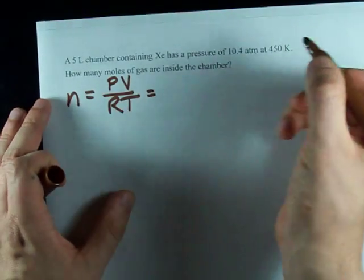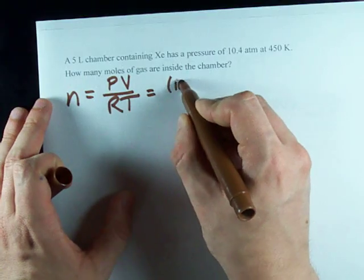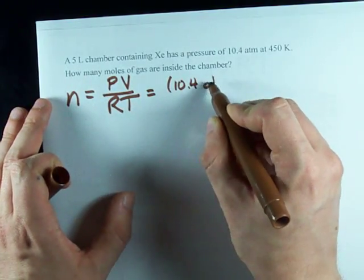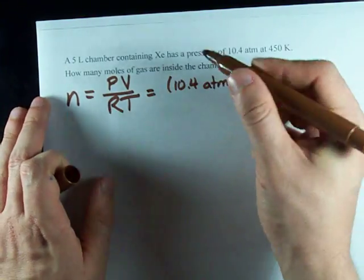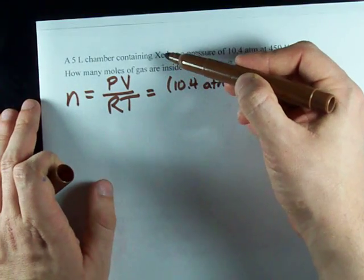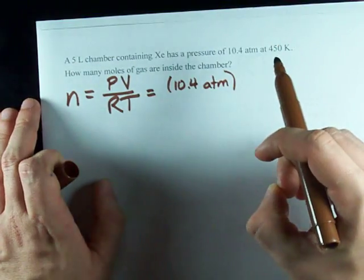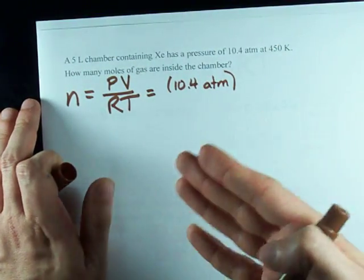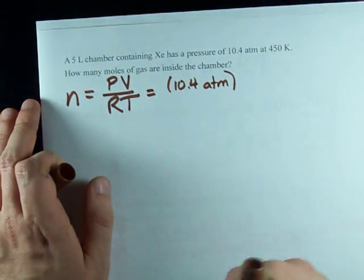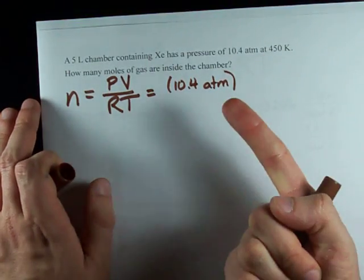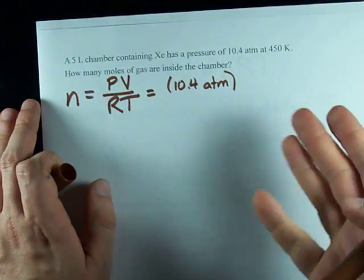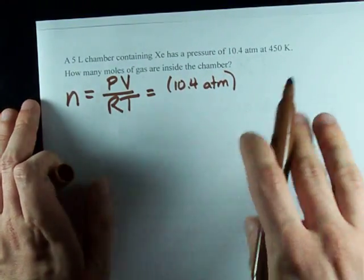Now, as I'm filling in the pressure of 10.4 atmospheres and volume, I just want to point out it doesn't matter what the gas is. The ideal gas law assumes that all gases are exactly the same, in that the gas molecules don't interact with each other, they don't have volume, etc. It's a bunch of assumptions.